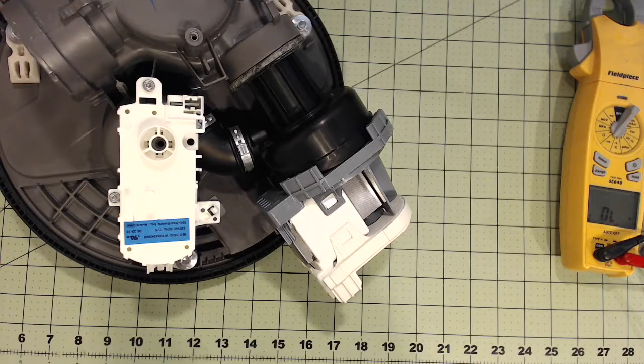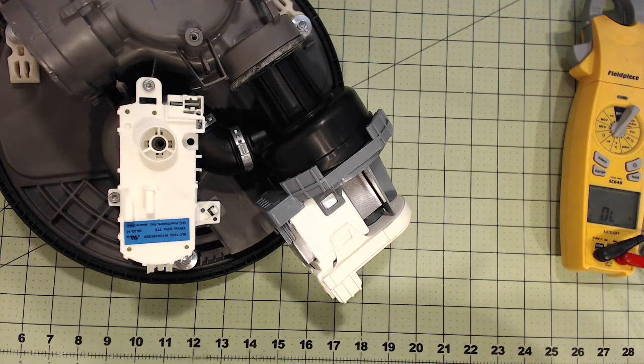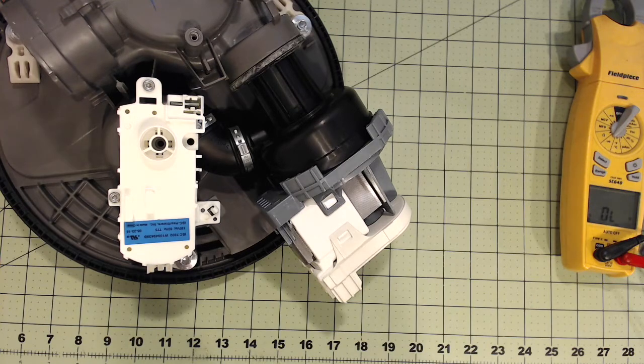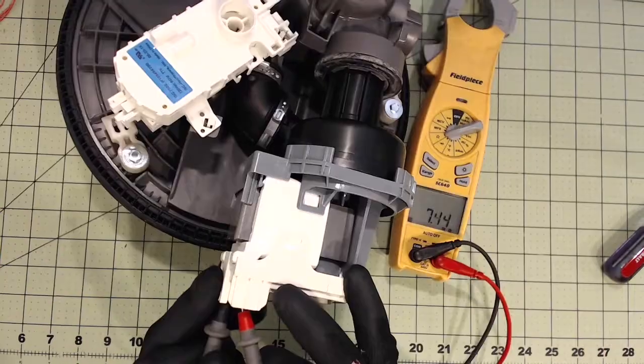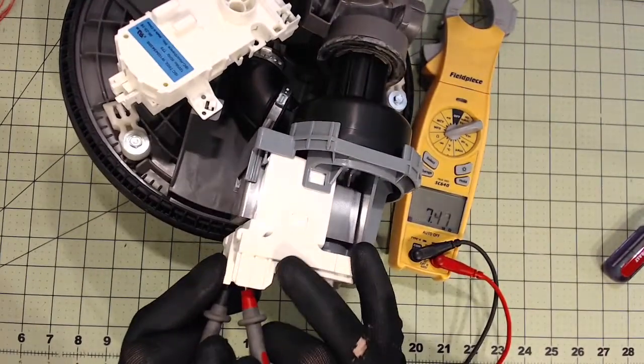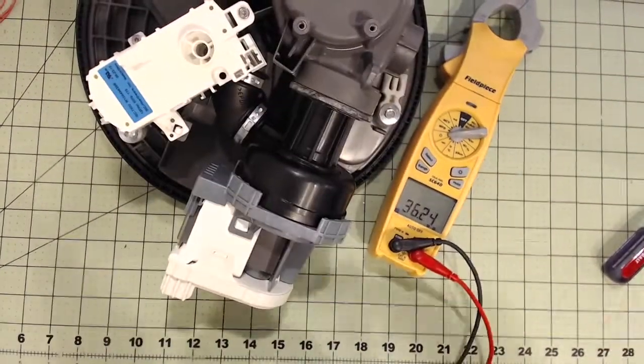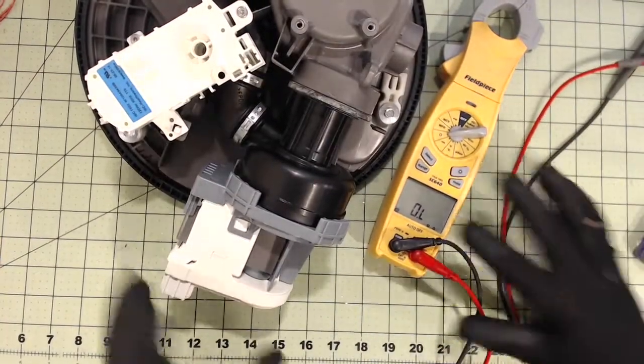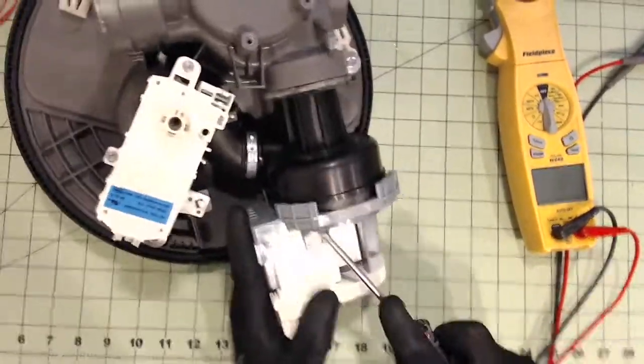So if it's mechanically stalled, then you'd hear a hum, but you don't hear a hum. You just hear nothing. And when you ohm it out, you just get an open circuit, and you get six, seven mega ohms. Okay, so I'm going to open this puppy up and see what's going on inside.